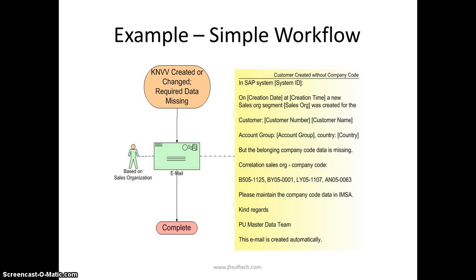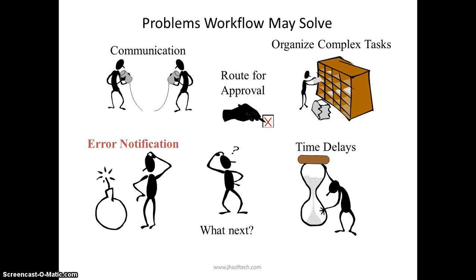Here is a simple workflow concept: if a customer number (KNV) is created or changed and required data is missing, a mail is sent, the issue is fixed, and the process is completed. Problems workflow can solve include communication problems — you don't have to worry about expressing things manually, as it happens mechanically through the workflow. If you need to send an alert to someone immediately, the workflow will take care of it. You can also organize complex tasks, route them for approval, and send error notifications.